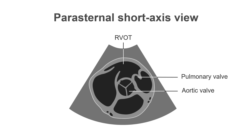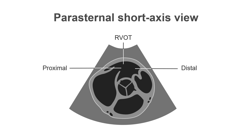Looking at the parasternal short axis view, we are now at the vessel level, where the pulmonary and aortic valves are both visible. In this view, the right ventricular outflow tract is seen at the top of the screen and can be measured at two levels: proximal and distal. Both measurements help us understand if the right ventricle is dilated or normal in size.